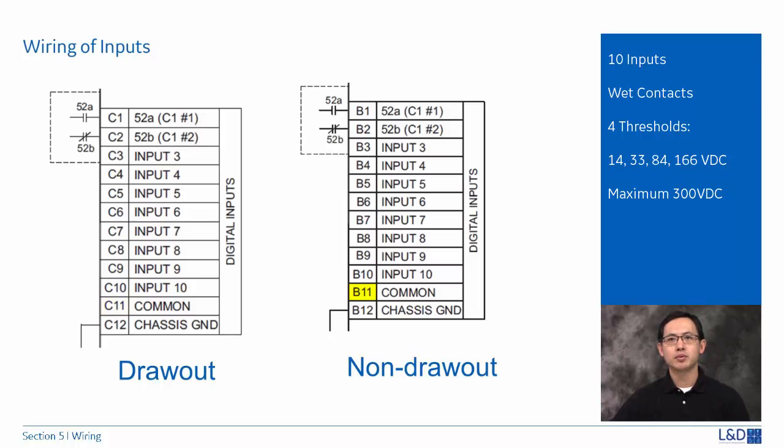The inputs can be programmed to different thresholds depending on the DC voltages. There are four threshold levels: 14 volts, 33 volts, 84 volts, and 166 volts DC. The maximum external source voltage for this arrangement is 300 volts DC.